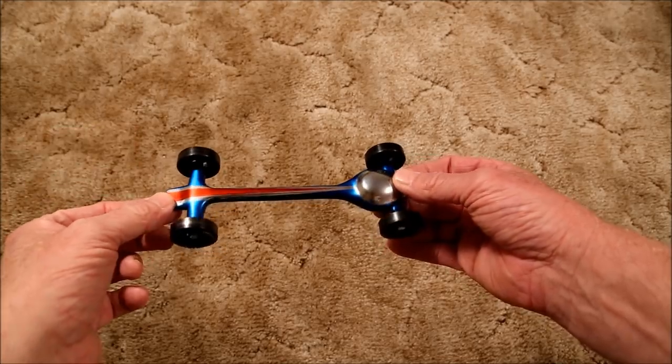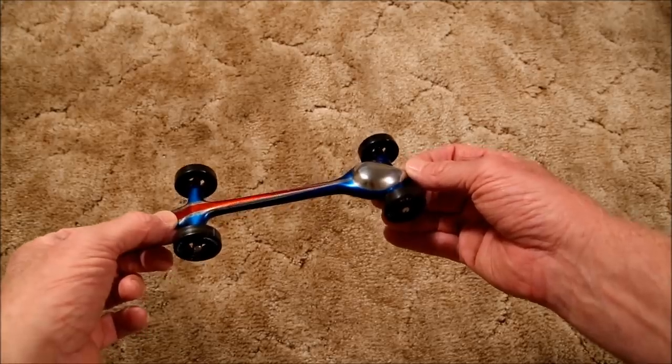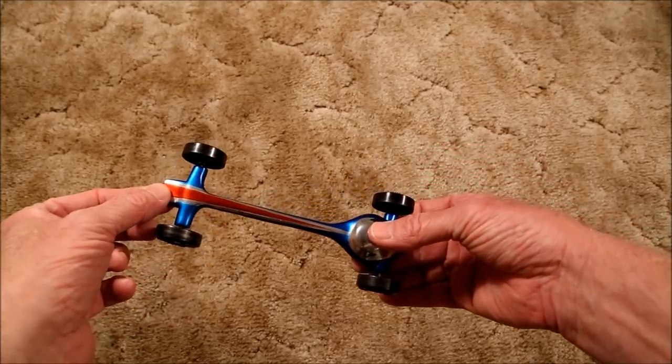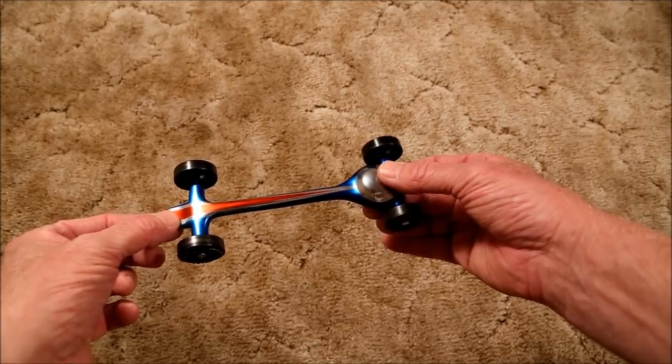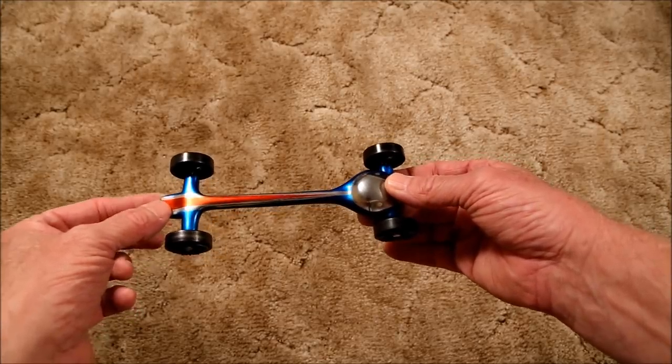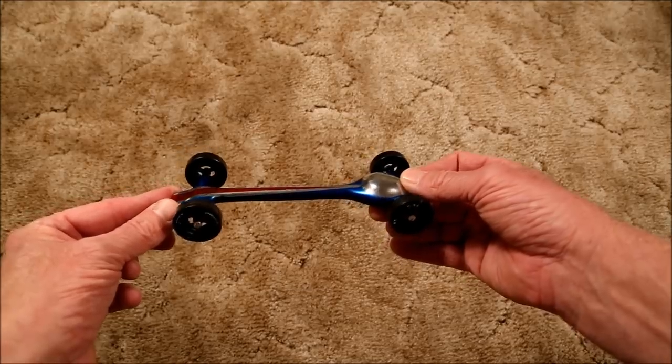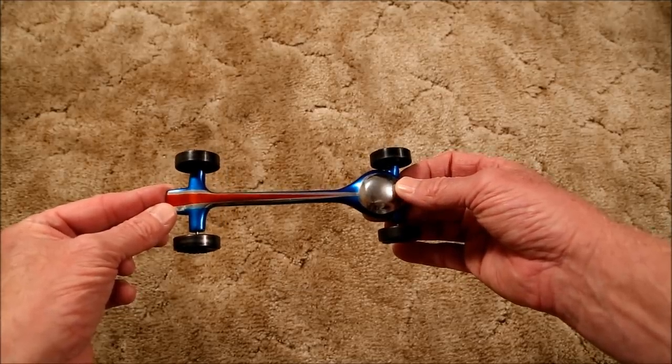While there are many different classifications of Pinewood Derby cars based primarily on the number of wheels that are allowed and how much work is allowed on each wheel to change its shape, they can all be grouped into two basic types: the straight runner and the rail rider.